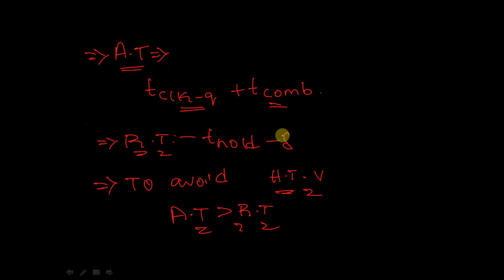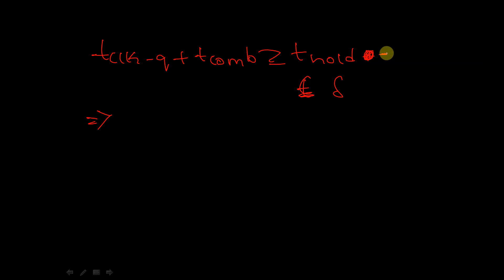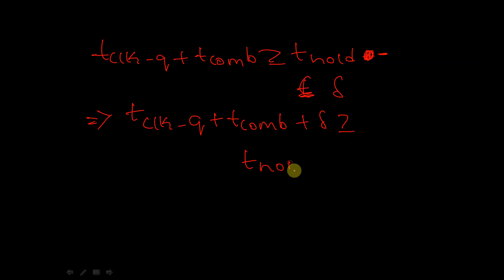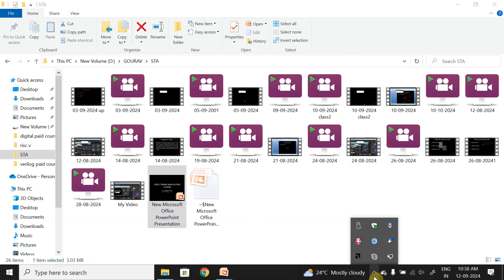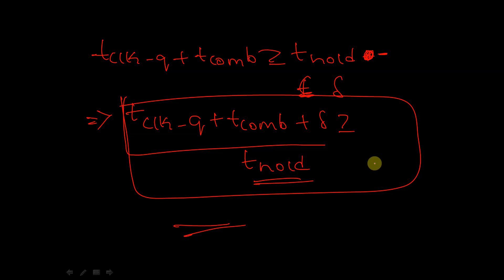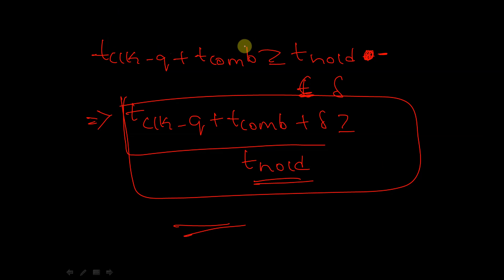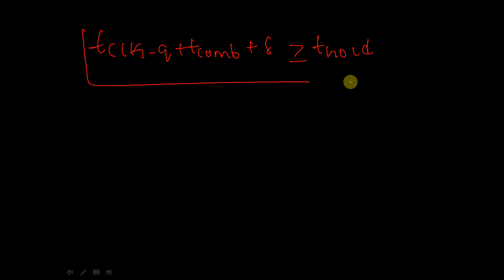Rearranging the hold time inequality, we get: T_clock-to-Q plus T_combinational plus delta should be greater than or equal to T_hold. This is the hold time equation with negative clock skew.